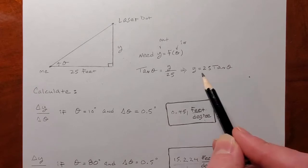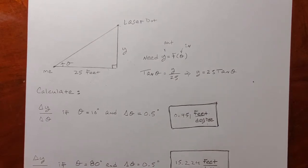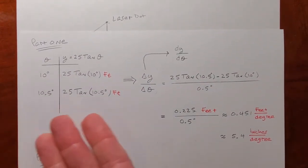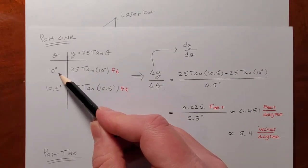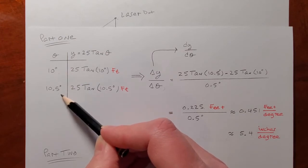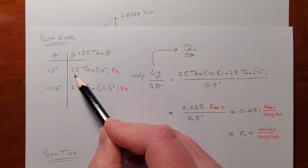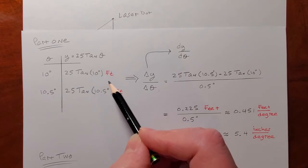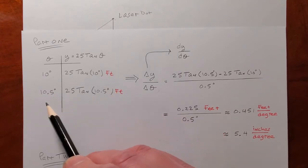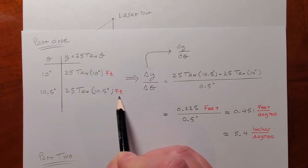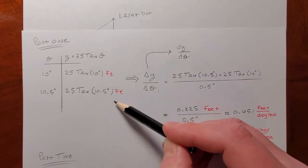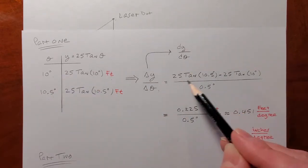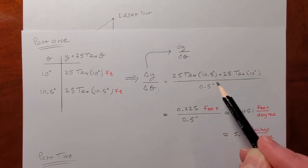In my videos I always use a table to present this. Theta is 10 degrees and changes by a half of a degree, so it goes from 10 to 10.5. As a result, y is 25 tangent 10 degrees feet, and then y is 25 tangent 10.5 feet. The change in y over the change in theta is going to be this y value minus that one, over this theta value minus that one. That literally is the change in y — subtract them — over the change in theta. There are units to consider when we are doing science or applications of math.